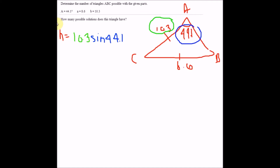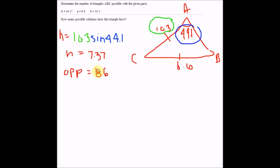So H = 10.3 × sine(44.1°), which equals 7.37. Now that we have our height, we write out the opposite side of the given angle, which is 8.6, and the adjacent side of the given angle, which is 10.3. With these we'll be able to determine how many solutions there are.